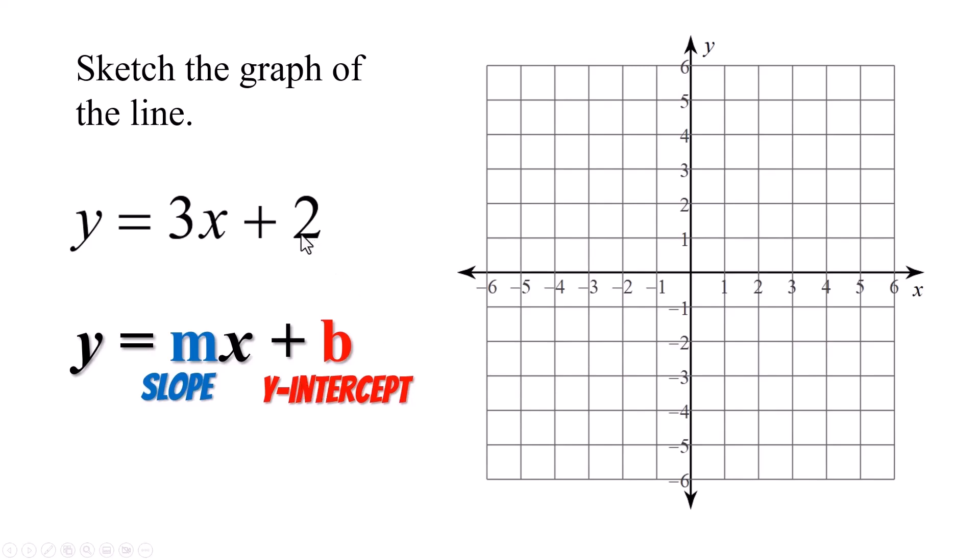Y equals mx plus b. The b is the y-intercept. And the y-intercept here is plus 4. So put a point on that. You have to start there. I mean the slope is awesome, but if you don't know where to start, you don't know where to count up from, you've got to have a starting point. And that's going to be your y-intercept.